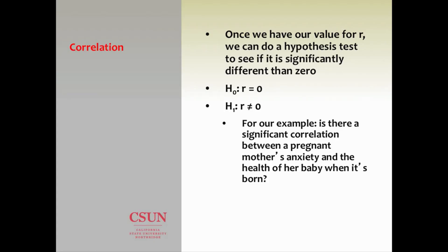The last step is to make our conclusion — I already talked about this when we got the SPSS output, so this will be a bit of a review. We return to our hypothesis testing triangle: if the p-value is less than 0.05, reject the null hypothesis; also, if the test statistic is greater than the critical value. What is our test statistic and what is our critical value?